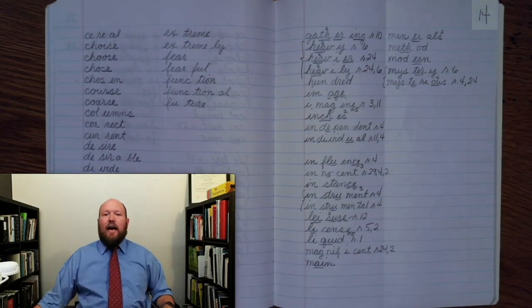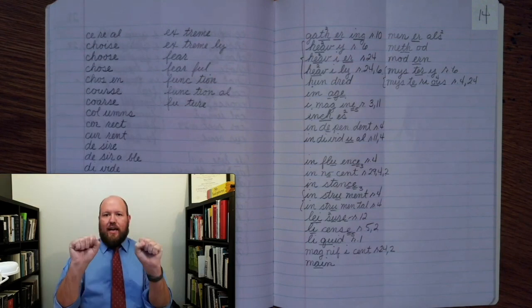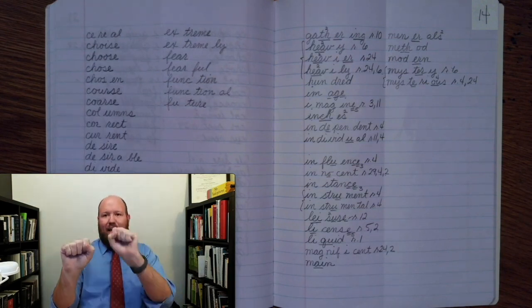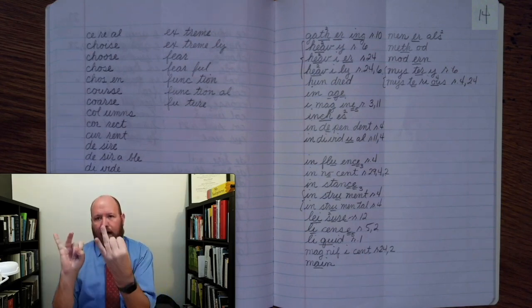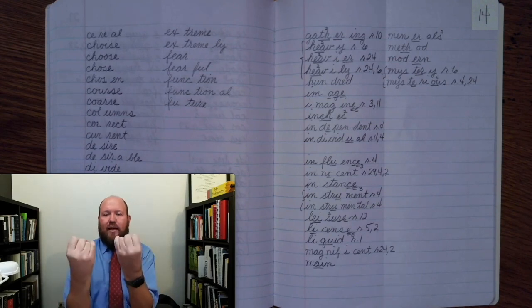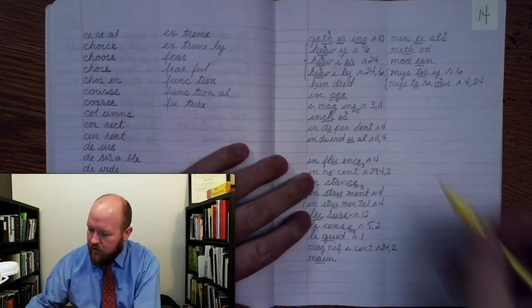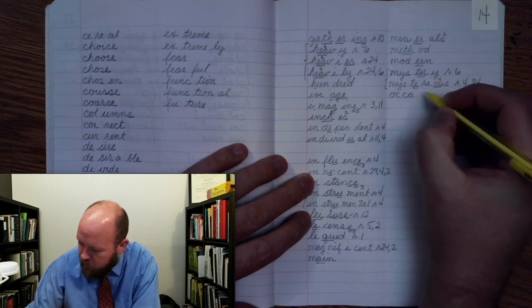Next word is occasion. Like, what is the occasion for this? Occasion. Base word. Occasion. Occasion. Occ, k, a, zh, a, n. Now both of the k sounds here are c's. And then what phonogram says zh, s, i. Okay? Occasion. Occ, k, a, zh, a, n.